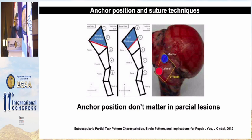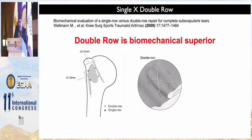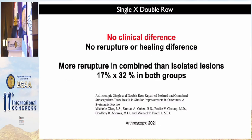Regarding anchor position and suture techniques, this paper shows that anchor position does not matter in partial or small lesions. But as the lesion progresses, more anchors are needed — especially inferiorly, in the inferior portion of the lesser tuberosity. Regarding single versus double row, double row is mechanically superior in subscapularis repair, but there is no clinical difference. This paper shows no re-rupture or healing difference, though re-rupture is more common in combined compared to isolated lesions.